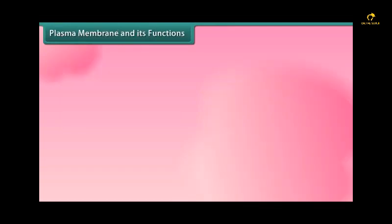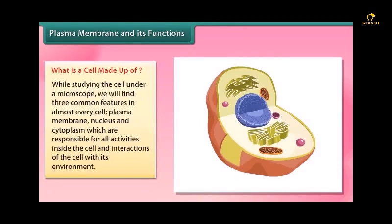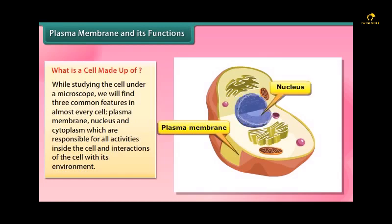Plasma membrane and its functions: What is a cell made up of? While studying the cell under a microscope we will find three common features in almost every cell: plasma membrane, nucleus and cytoplasm, which are responsible for all activities inside the cell and interactions of the cell with its environment.